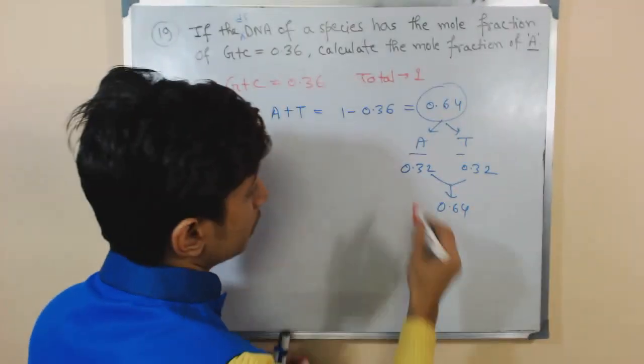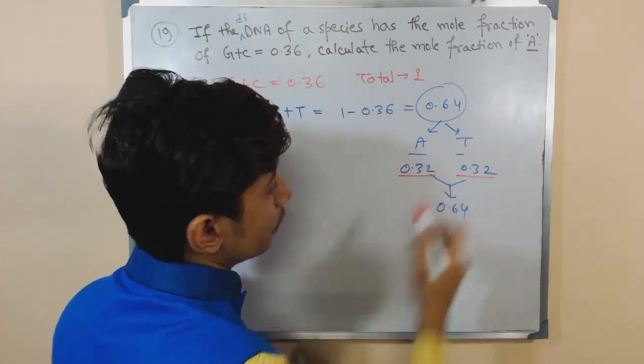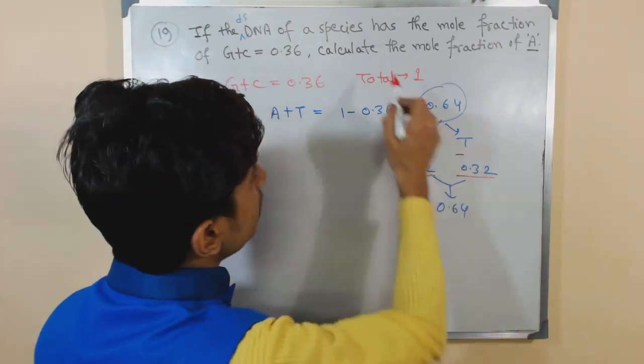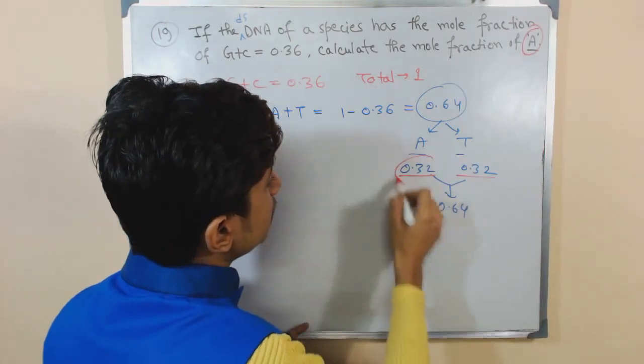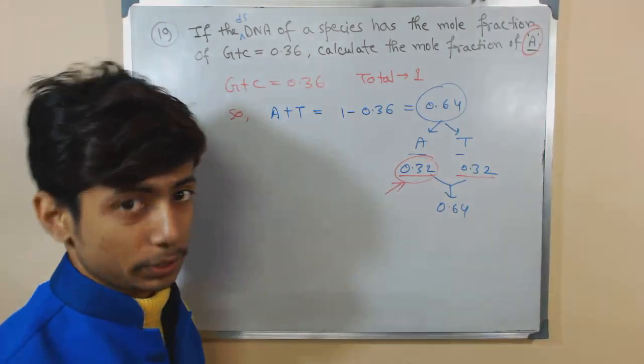In this case, adenine will have the mole fraction of 0.32, and thymine will have a mole fraction of 0.32. So the answer to what will be the mole fraction of adenine is 0.32.